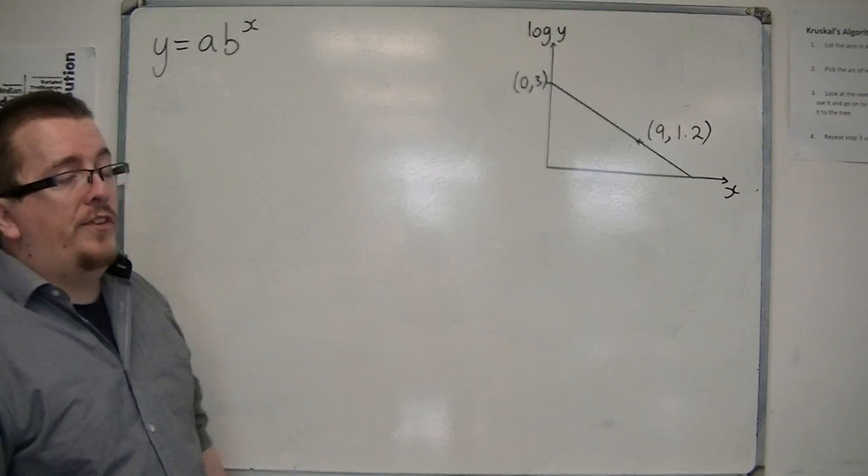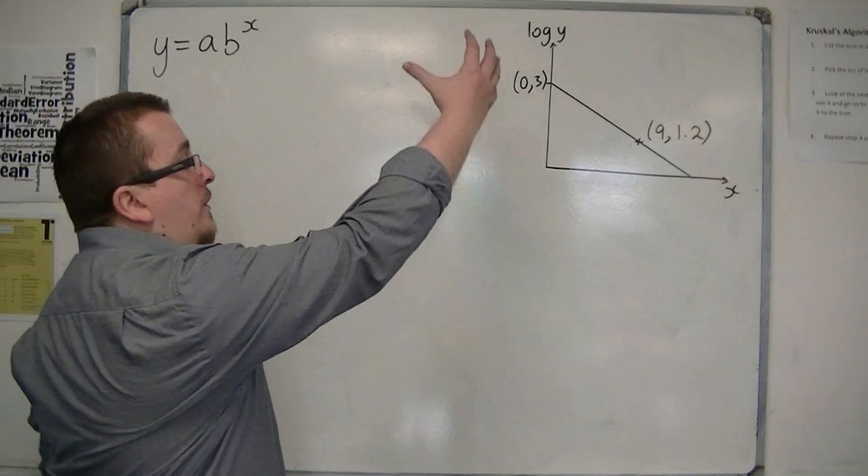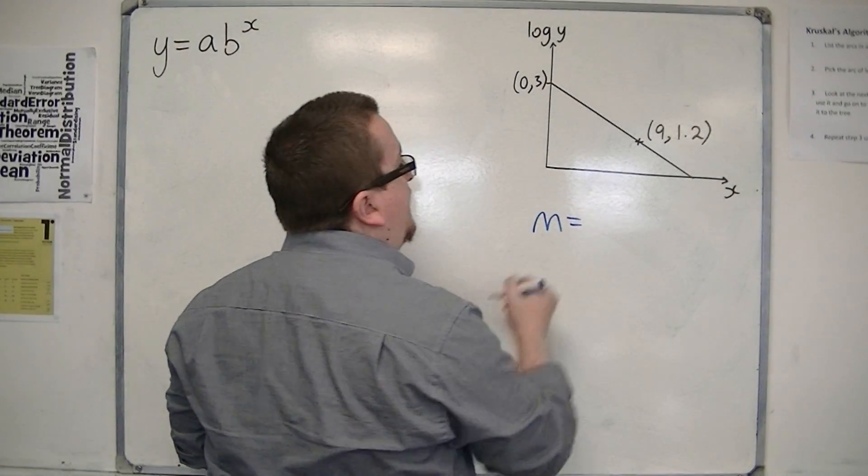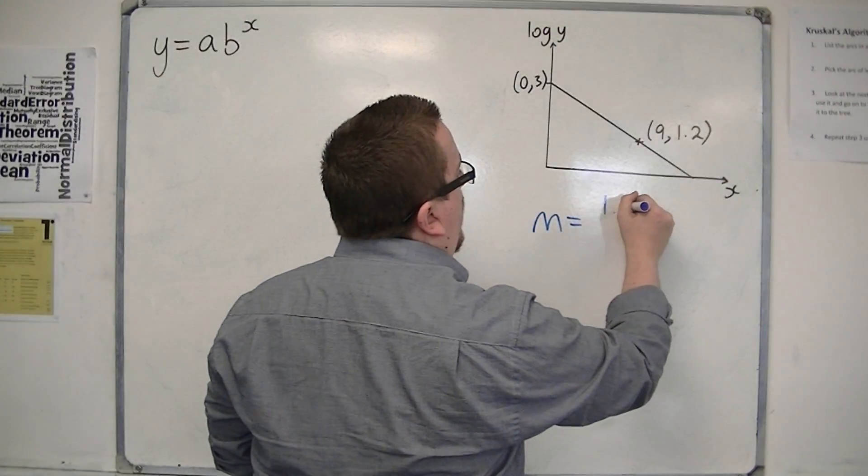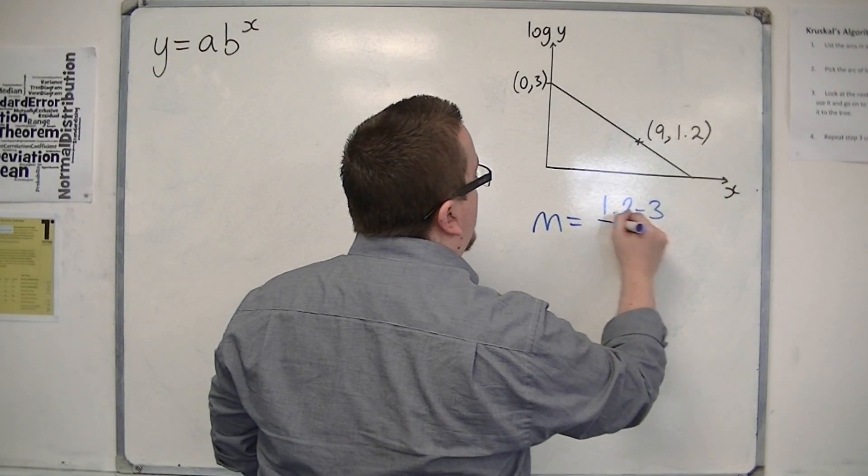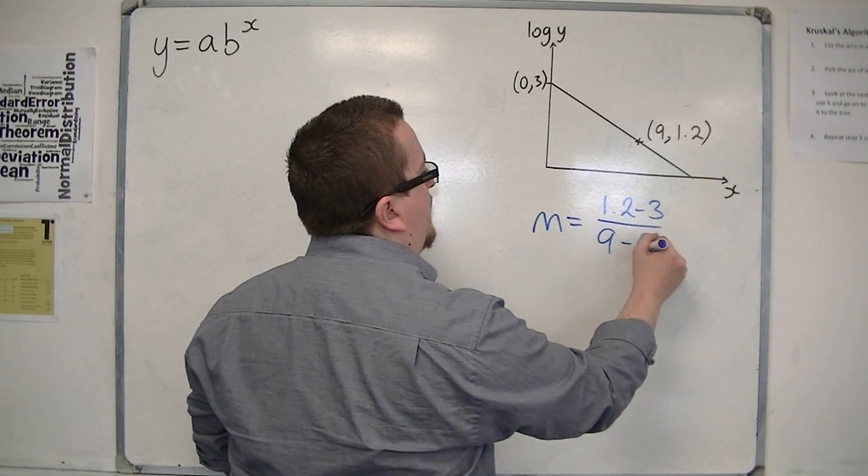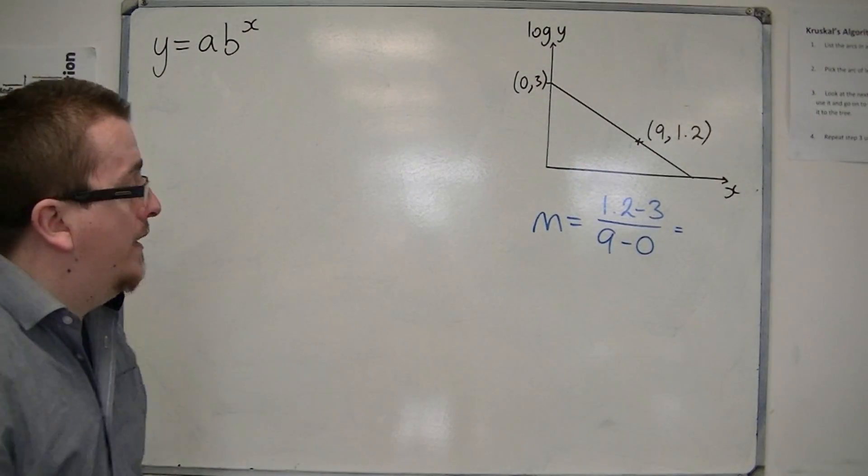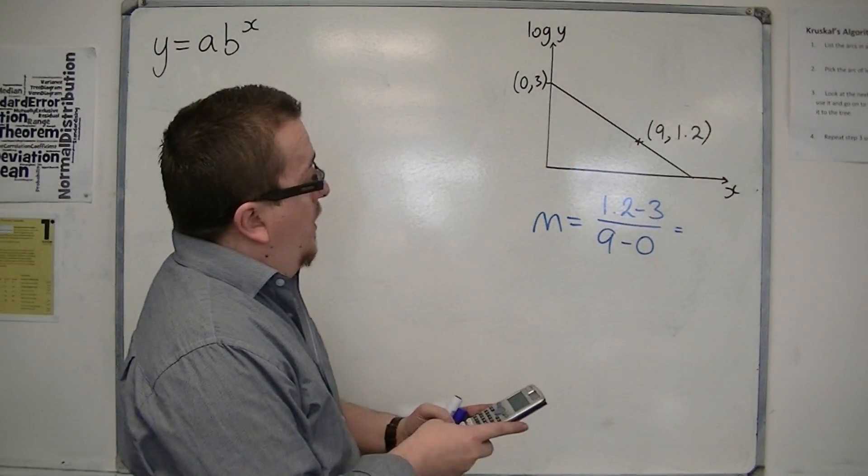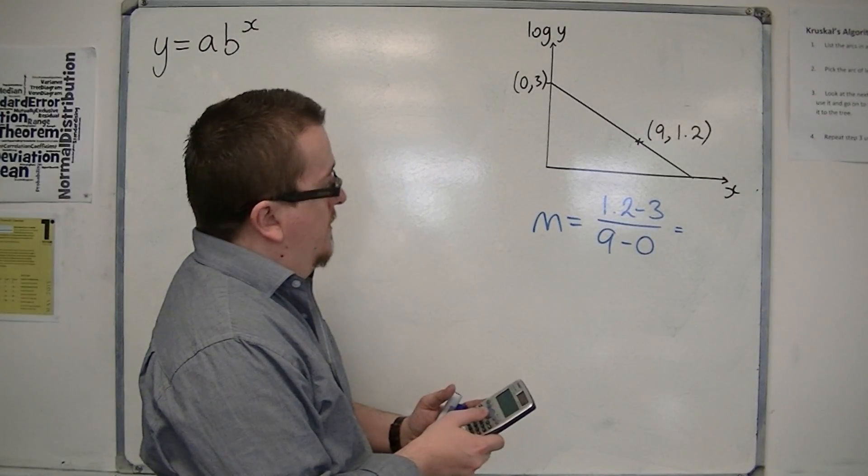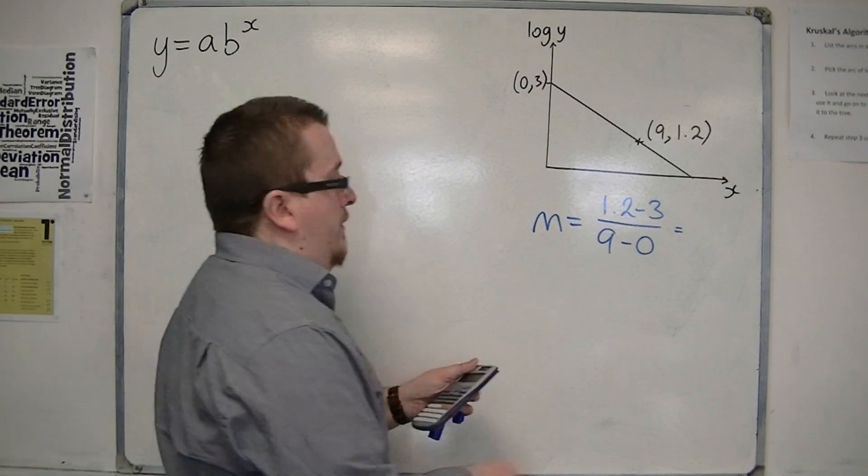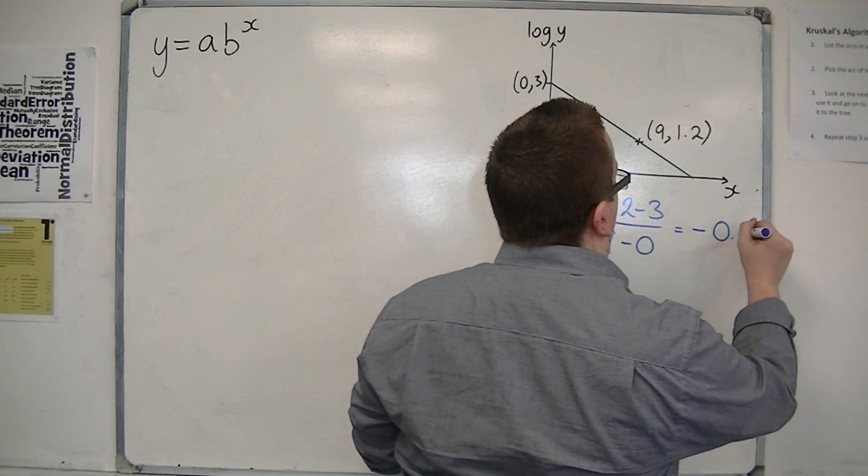So the first thing I want to do is write down the gradient of this line. So m is the difference in the y-coordinates, so 1.2 take away 3, divided by the difference in the x-coordinates, 9 take away 0. So I plug that into my calculator. 1.2 take away 3, divided by 9 take away 0, is minus one-fifth, or minus 0.2.